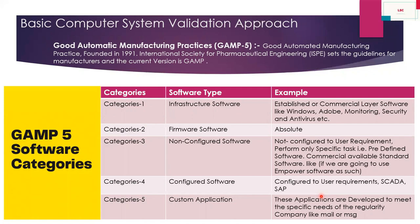When we get the idea, just remember the GAMP 5 categories. Category 1 is infrastructure software — established or commercial layer software like Windows, Adobe, and antivirus. For these you have only a license; you do not need to validate anything. Category 2 is firmware software, which is now obsolete in GAMP 5. Category 3 is non-configured software — software that performs only specific predefined tasks, commercially available as standard software, like using Empower as-is without any user-specific configuration.